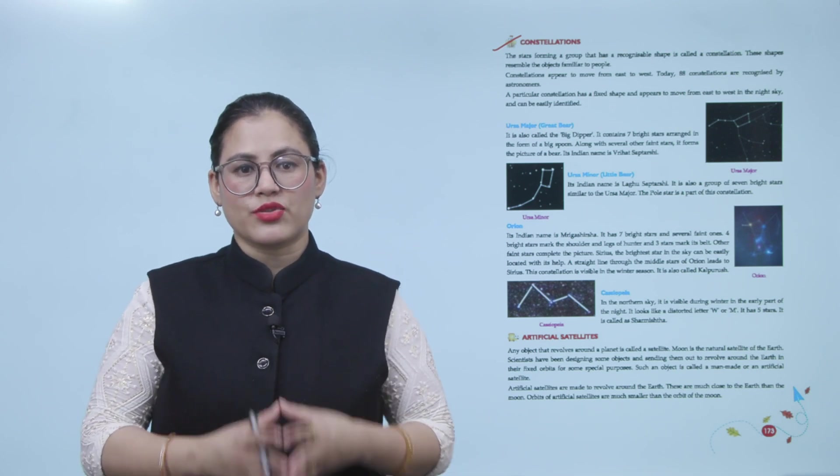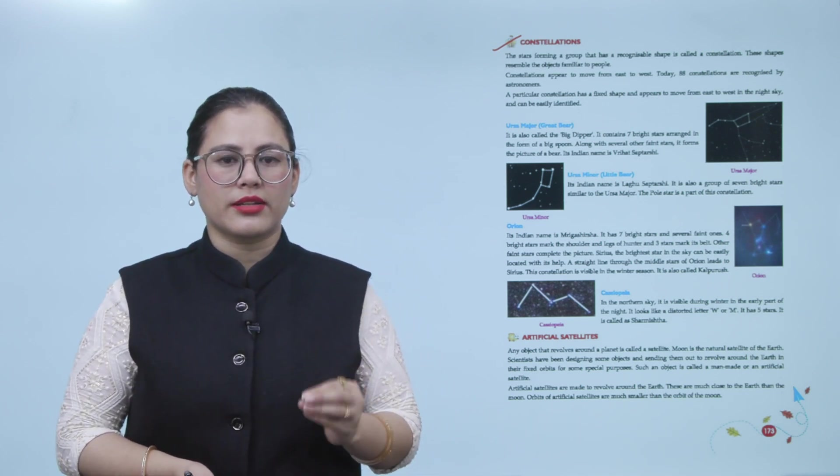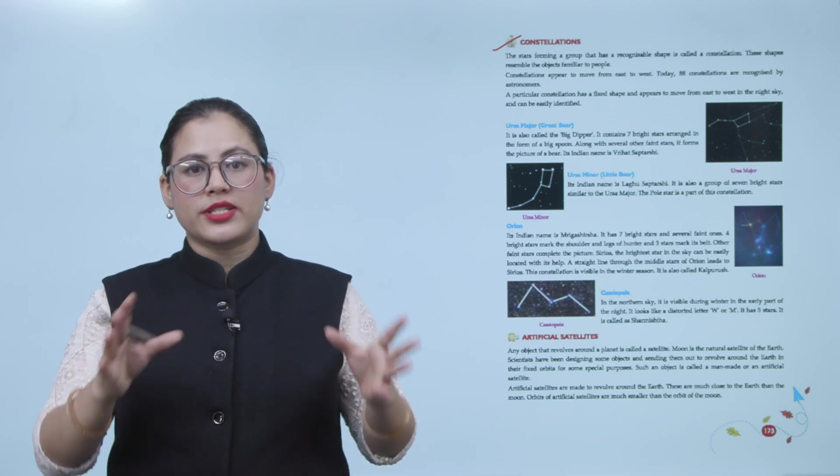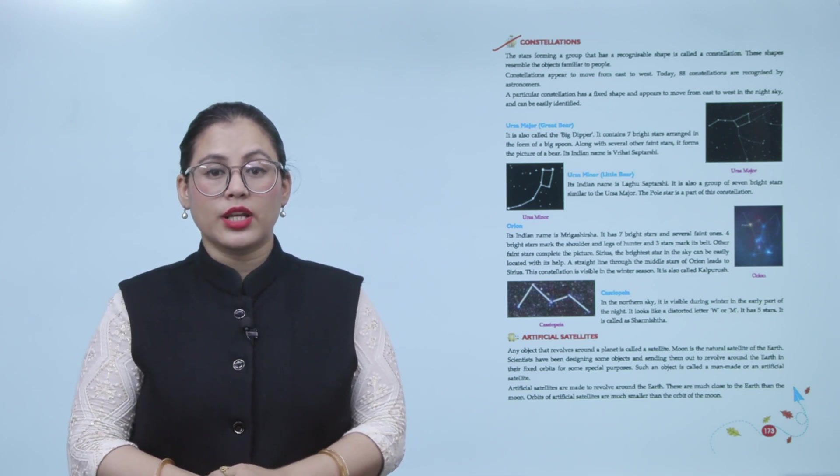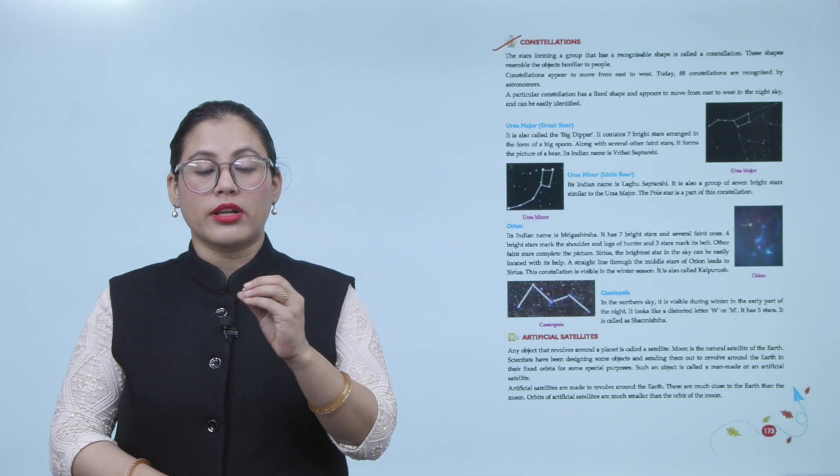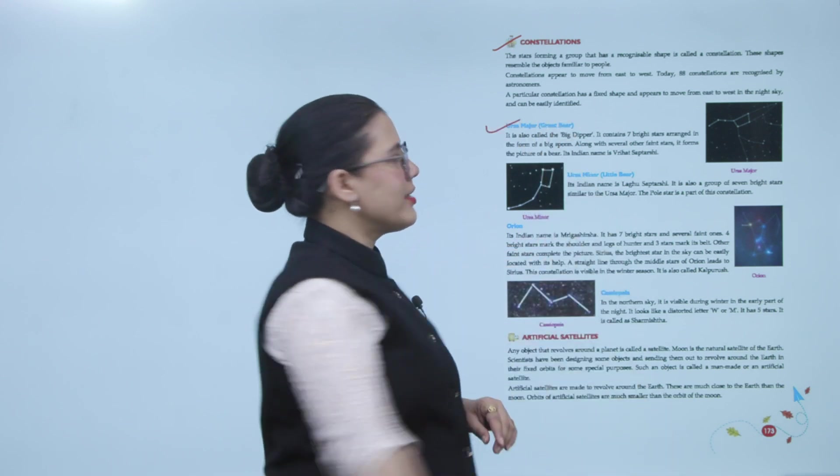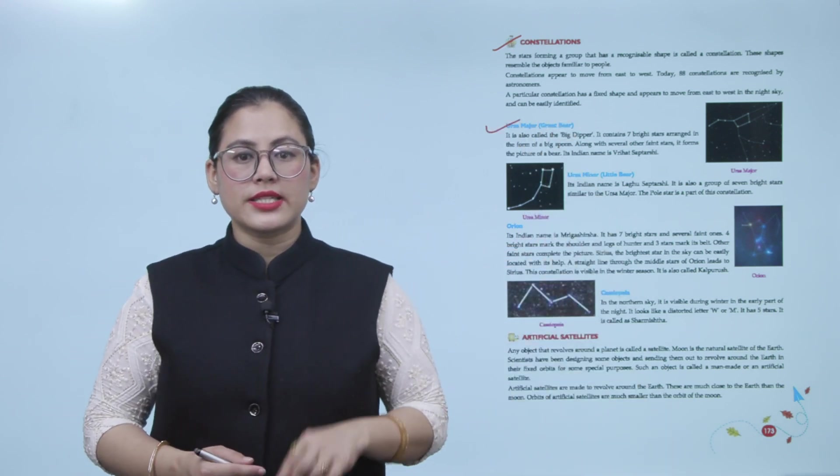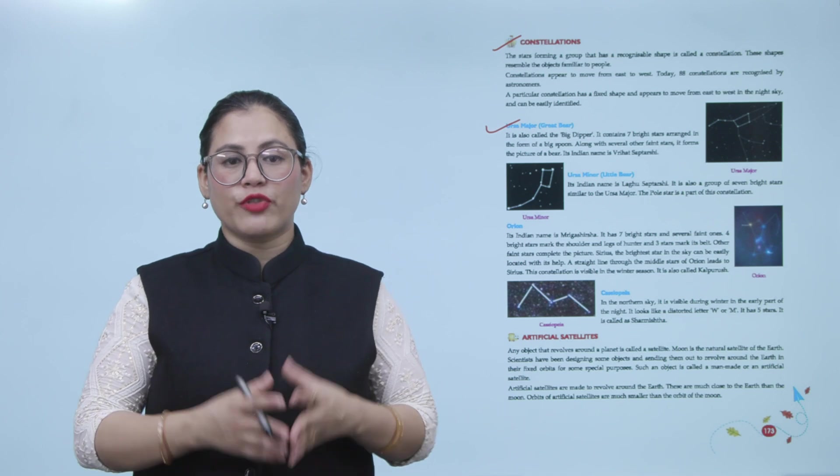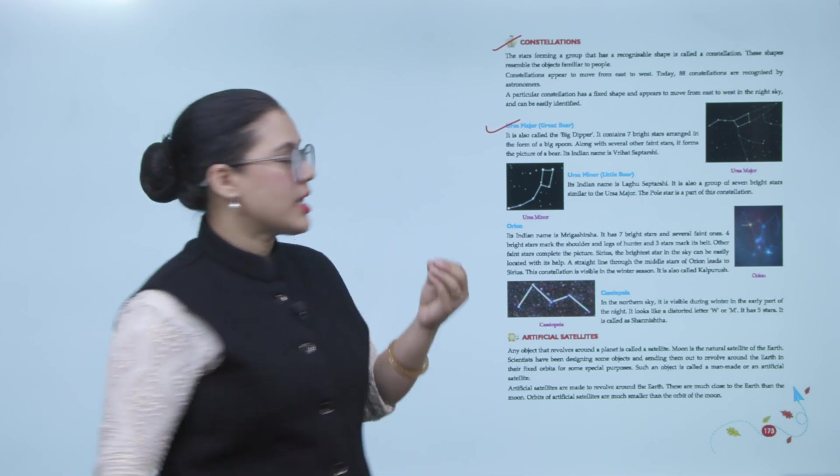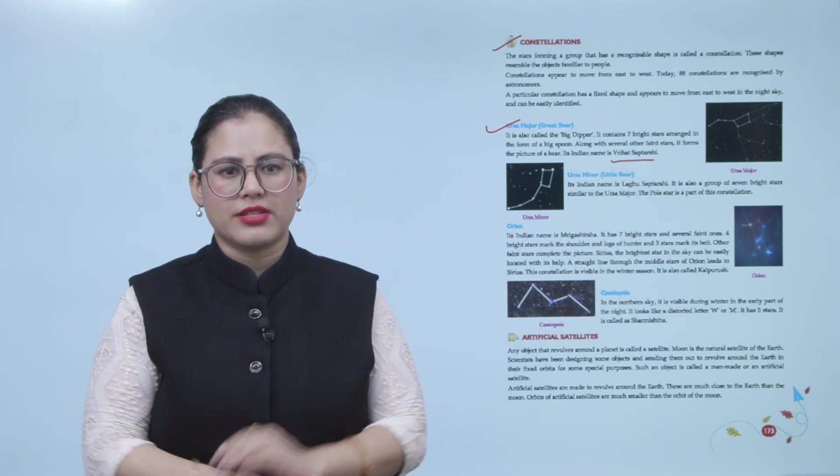Constellations. A constellation is a group of stars which make a recognizable shape or pattern. Today, 88 constellations are recognized by astronomers. A particular constellation has a fixed shape and appears to move from east to west in the night sky and can easily be identified. There are 88 constellations which astronomers have recognized. Ursa Major, also called the Big Dipper. It consists of seven brightest stars arranged in the form of a big spoon, along with several other faint stars. It forms a picture of a bear. Its Indian name is Vrihat Saptarishi. It looks like a big spoon. There are seven bright stars and faint stars.